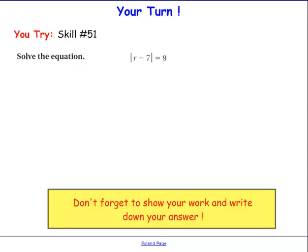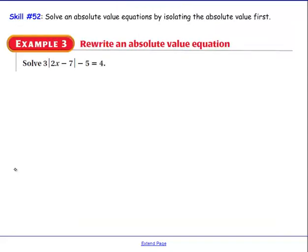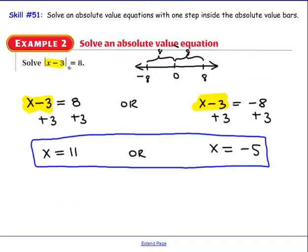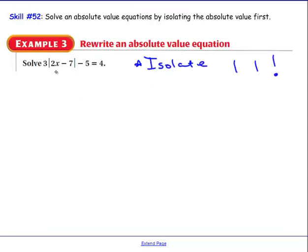Here's an example for yourself to try on your own. Now we're going to look at a more complicated equation that requires many more steps. The major difference here is that the absolute value is not by itself — it has a 3 multiplied by it and a negative 5 added to it. What you need to remember, which is very important, is that you always need to isolate the absolute value first. If it's already isolated, like in our previous example where the absolute value of x minus 3 was by itself, we don't have to do much. But now we must address both the 3 multiplied by it and the negative 5 subtracted from it.